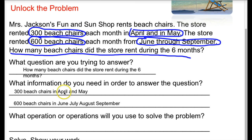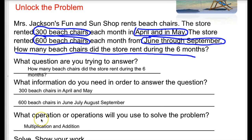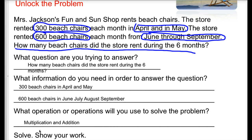So we have 300 beach chairs in April and May, and 600 beach chairs in June, July, August, and September — because June through September accounts for all four of those months. Now we need to decide what operations to use. Since we have 300 chairs for two months and 600 chairs for four months, we'll multiply to find the total for April and May, multiply to find the total for June through September, and then add those two products together. So we'll use multiplication and addition to solve this problem.